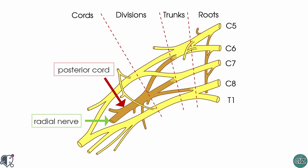This schematic of the brachial plexus shows how the radial nerve contains nerve fibers from spinal roots C5 to T1. Check out my video series on the brachial plexus for more information on this topic and to learn about its structure in more detail.